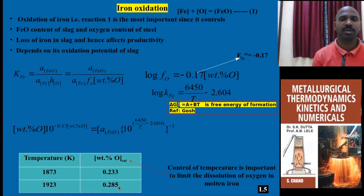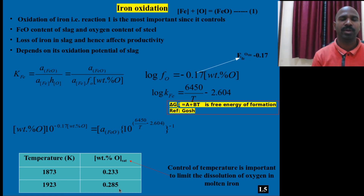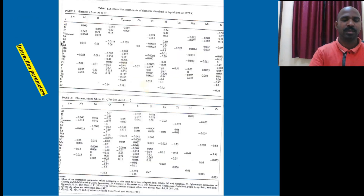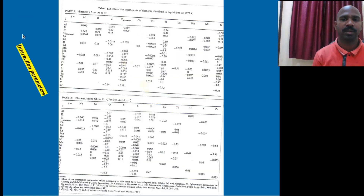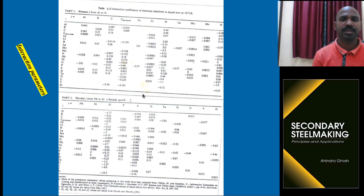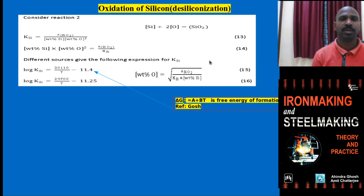The dissolution of oxygen in steel can be controlled with respect to temperature — at higher temperature, dissolution of oxygen will be more. These are a few of the interaction parameter values with respect to the elements. One can refer to these and substitute in the equations; values for all these elements are given.